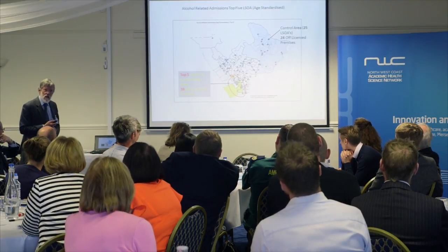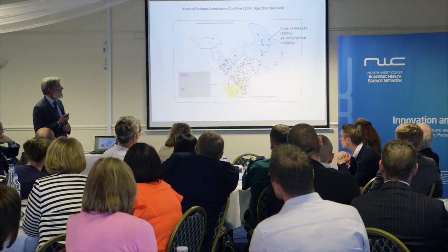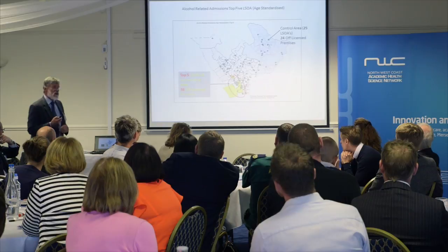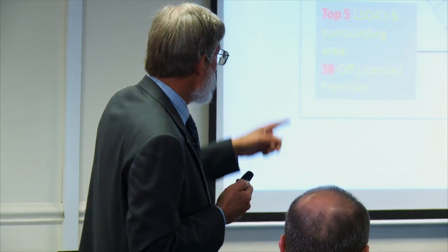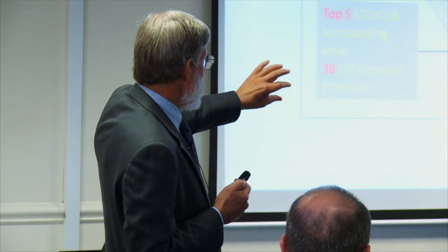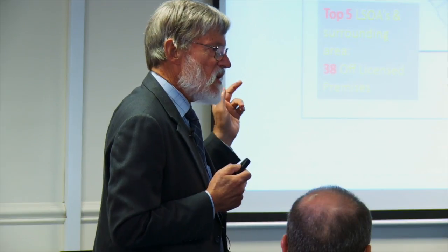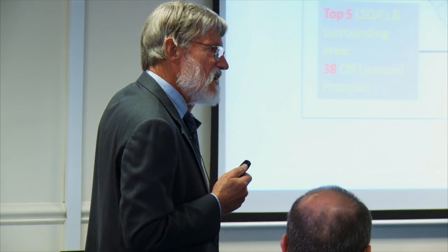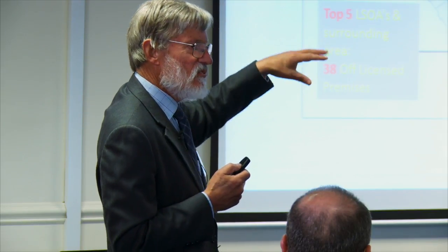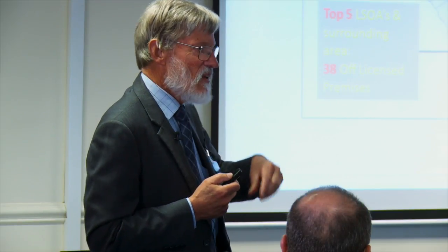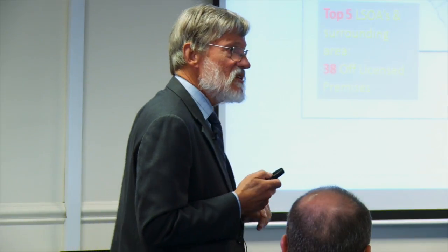Here is the outlets map — our off-licences. Look at our control area: they've got 25 lower super output areas and 24 off-licences, things like big stores. Down in the bottom area, in a patch of five, we've got 38 off-licences — and these are the bargain-boozes of the world. We can't say it's cause and effect; it's quite as likely that these are outlets following the purchasers rather than the cause of their problem. But it does suggest opportunities for intervention.